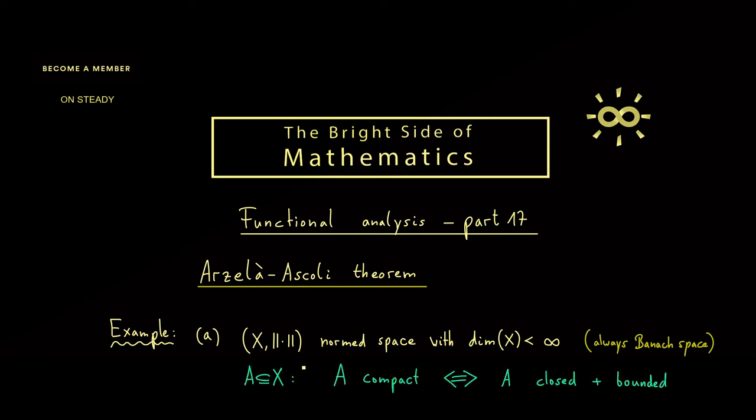Please keep in mind that we have already learned that in general metric spaces only the implication from left to right is correct. Indeed this is what we have in an infinite dimensional normed space.